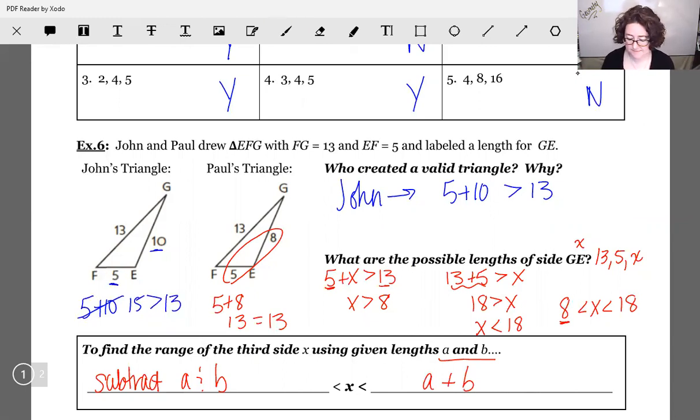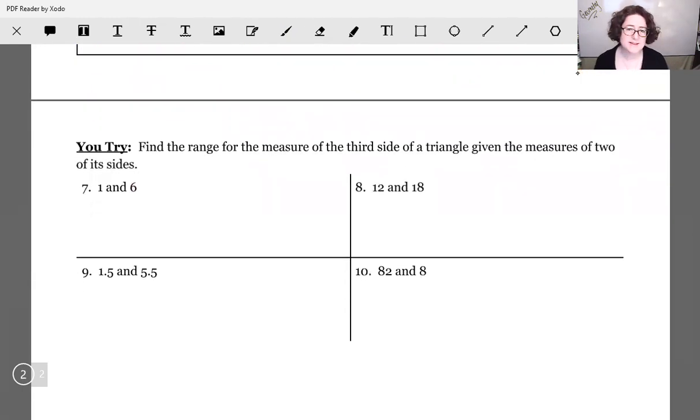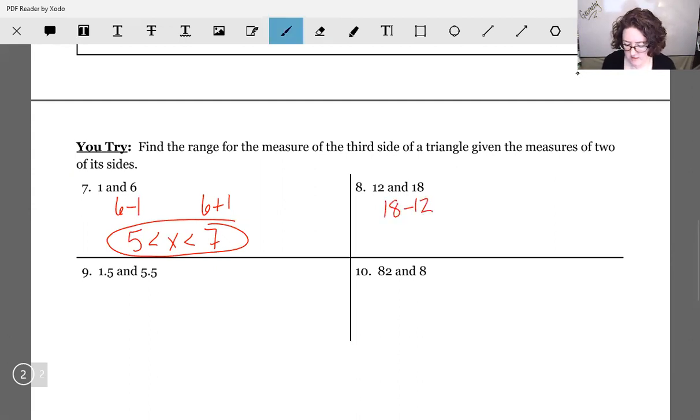Let's apply this to a couple problems. You try, let's do a couple together then you try the others on your own. If we're given 1 and 6, we want to subtract them to get the low end of the range. So 6 minus 1 is 5. Then we're going to add them to get the high end. 6 plus 1 is 7. Your missing side has to be sandwiched in the middle, so 5 is less than X which is less than 7. Let's try that with number 8. Subtract for the low end, add for the high end. 18 minus 12 gives us 6, and 18 plus 12 gives us 30. So our X has to be sandwiched somewhere in the middle. 6 is less than X is less than 30.